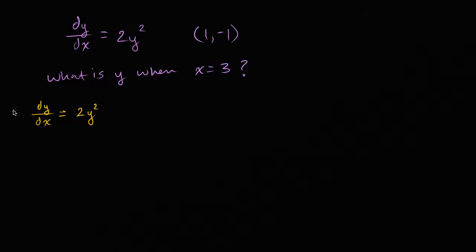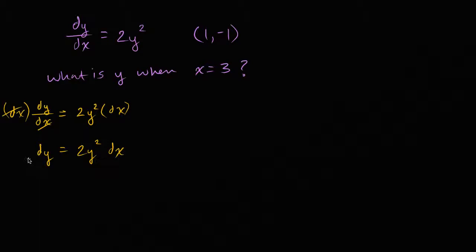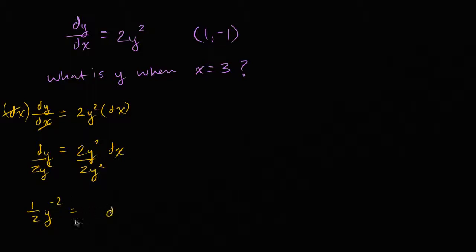We can multiply both sides by dx — treating it as a variable — so we get dy is equal to two y squared dx. We're not quite done yet. We need to get the two y squared on the left-hand side, so we divide both sides by two y squared.